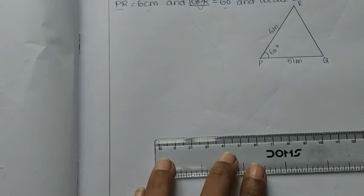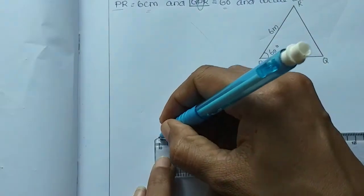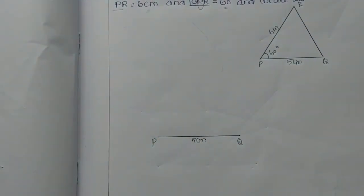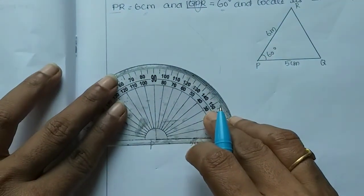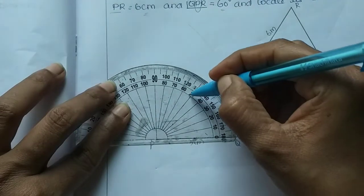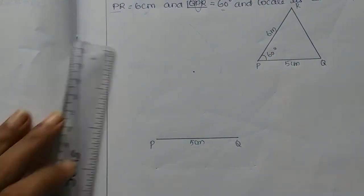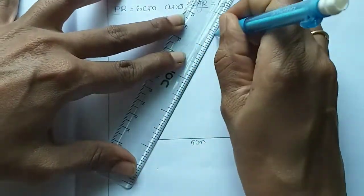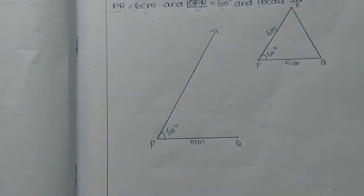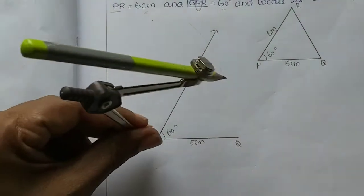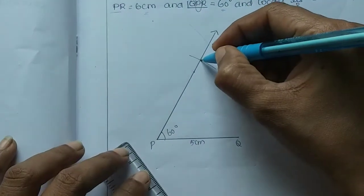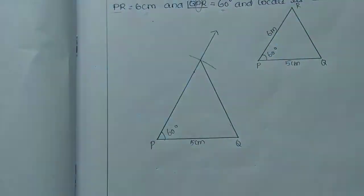We will draw the main figure. This is 5cm — P and Q. The angle at P is 60 degrees. Draw a point at 60 degrees and mark the measurement as 6cm using the compass. Mark this point here — this is PQ and this is R.